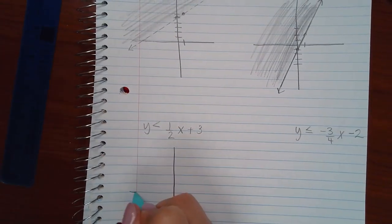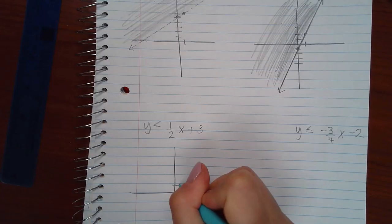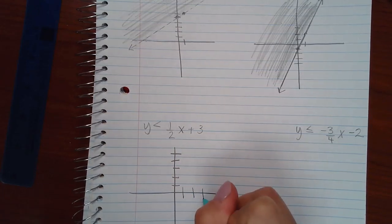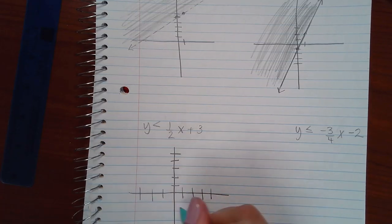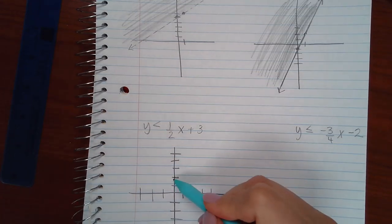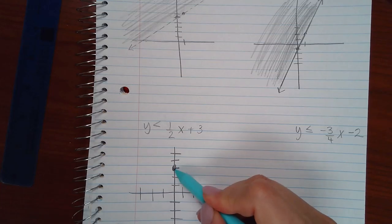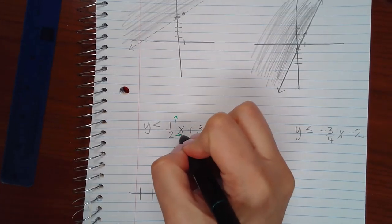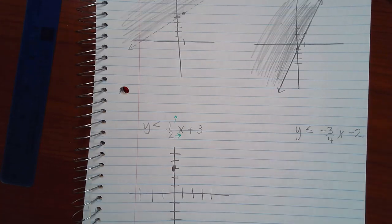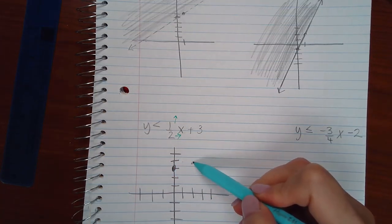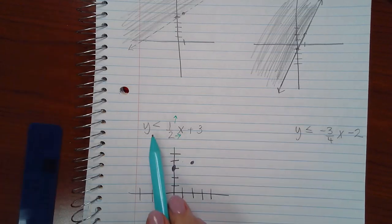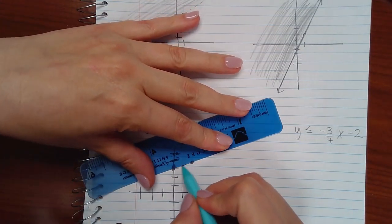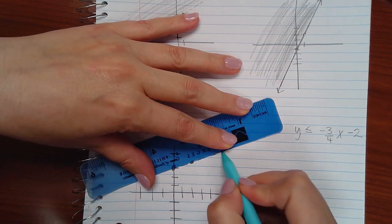So here, we've got another one. Y value of 3. So I'm going to go 1, 2, 3. And then I already have a fraction here. So I'm going to go up 1 and over to the right 2. So I'm going to go up 1 and then to the right 2. Now this does not have an equal bar. So when I draw my line, I need to make sure that I'm drawing a dotted line.